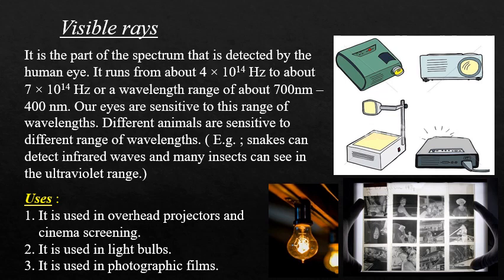Visible rays are the part of the spectrum detected by the human eye. They fall in the frequency range of 4 × 10¹⁴ Hz to about 7 × 10¹⁴ Hz and a wavelength range of about 700 nm to 400 nm. Human eyes are sensitive to this range. Different animals are sensitive to different ranges; for example, snakes can detect infrared rays and many insects can see in the ultraviolet range.